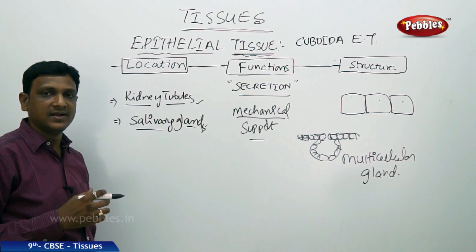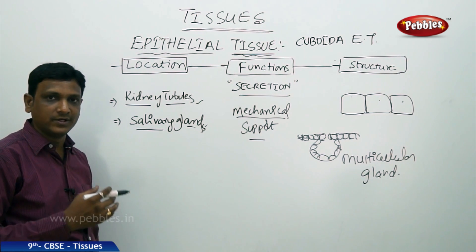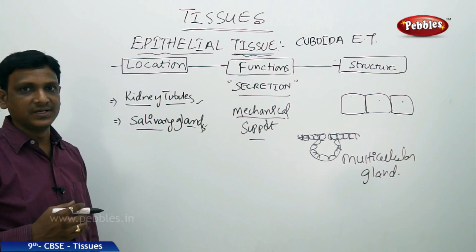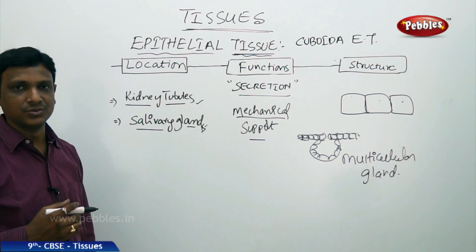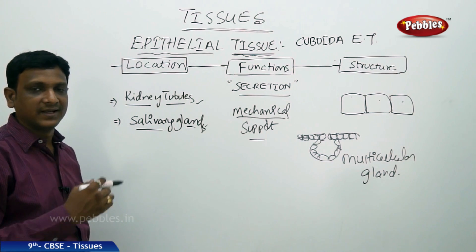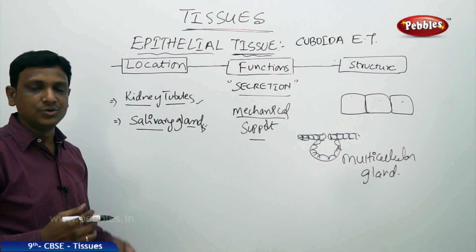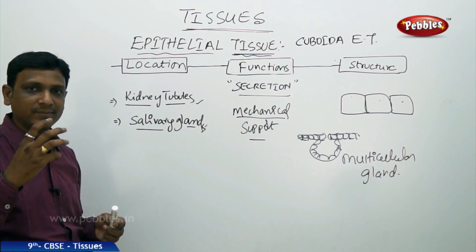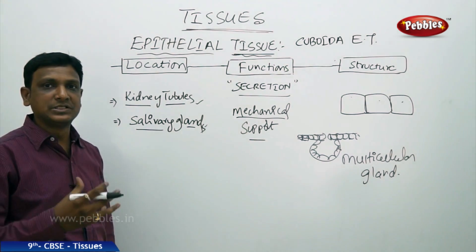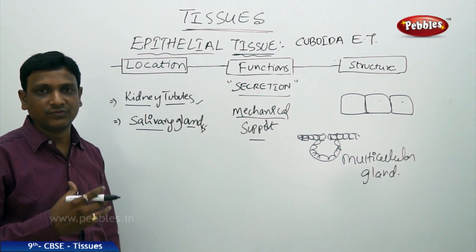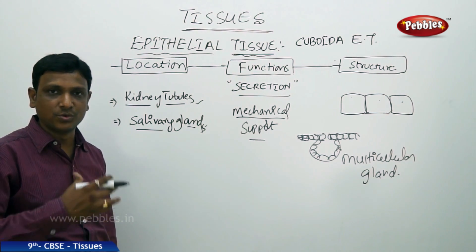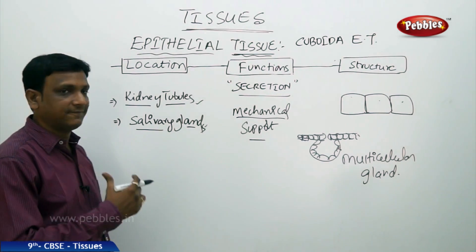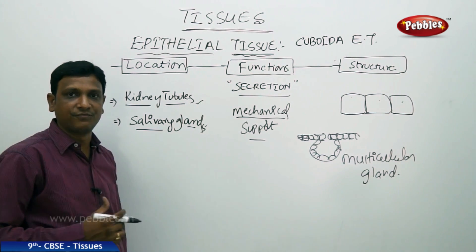We discussed that epithelial tissue is of different types according to shape and function: squamous, columnar, and cuboidal epithelial tissue. Next we move to connective tissue. Connective tissue helps animals by providing strength and also assists in the transport of different materials from one location to another within the body. Let us see the structural and functional features of connective tissue.